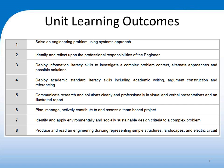Looking at the unit learning outcomes — these are the attributes you should be able to display at successful completion of this unit. First, we want you to understand looking at an engineering problem from a systems point of view, at a holistic level. You need to identify and reflect upon your professional responsibilities as an engineer, deploy information and literacy skills, understand the academic standard required for writing and argument construction and referencing, and communicate your findings professionally in visual, verbal, and report writing forms. Report writing is key in engineering.